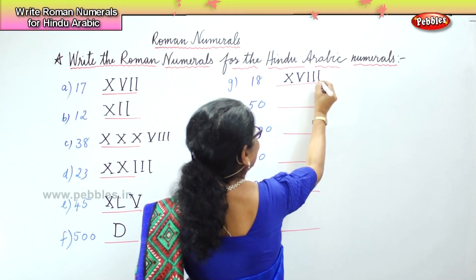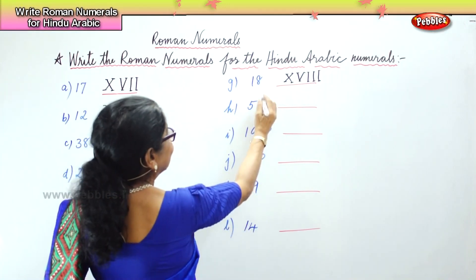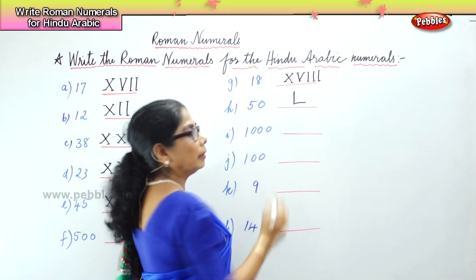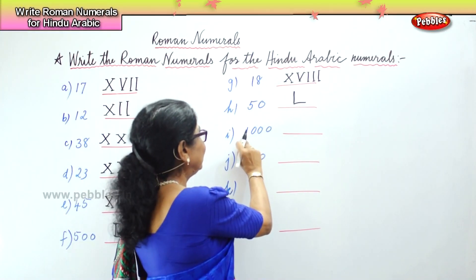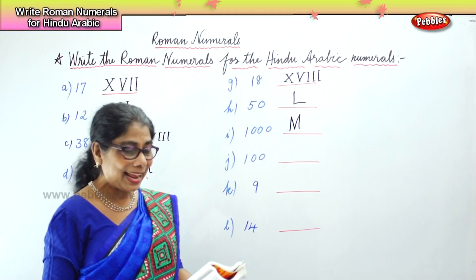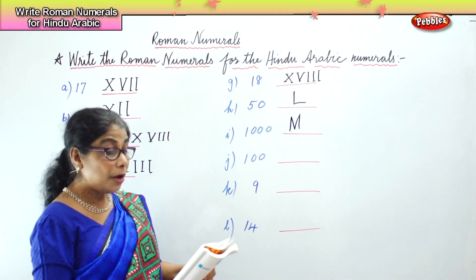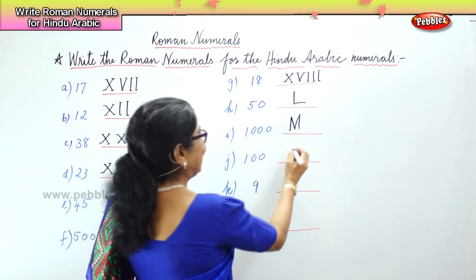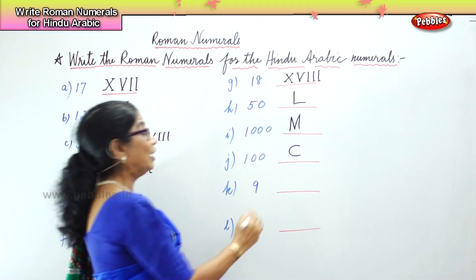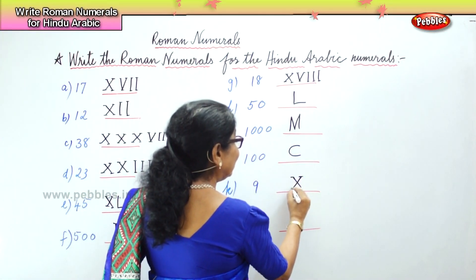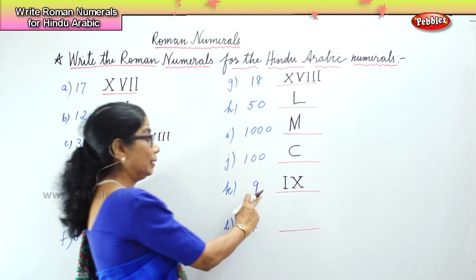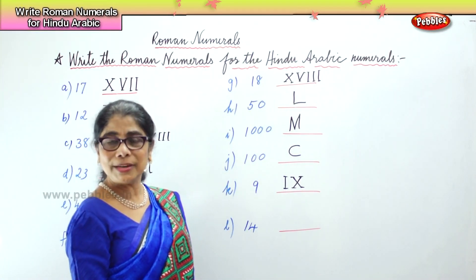Next we have 50. What did we say? 50 is L. Now what is 1000? What is that letter? M — 1000 is M. Next we have 100, that is C. Very good, 100 is C. Now there is 9 here. You have to write 10 — that's the greater numeral — and you put 1 to the left side. So 10 minus 1 is 9. There is a change in 9, you have to be careful.